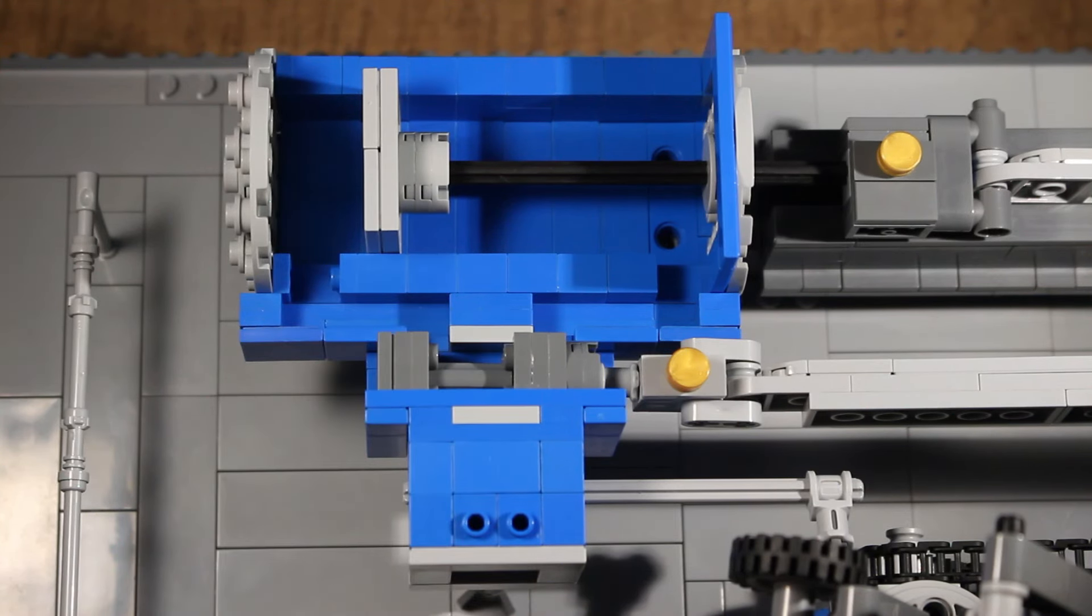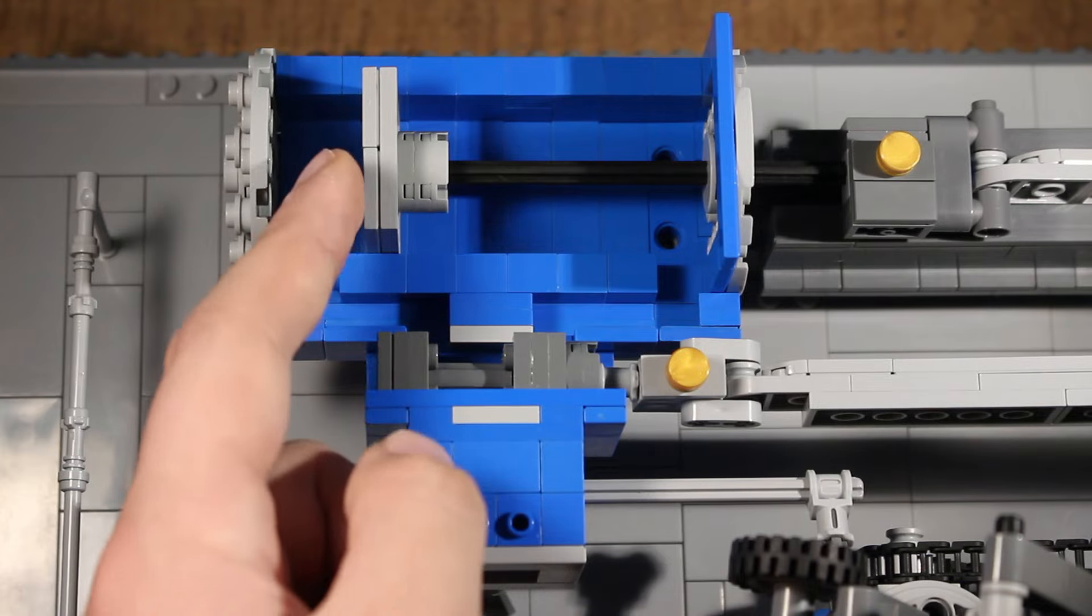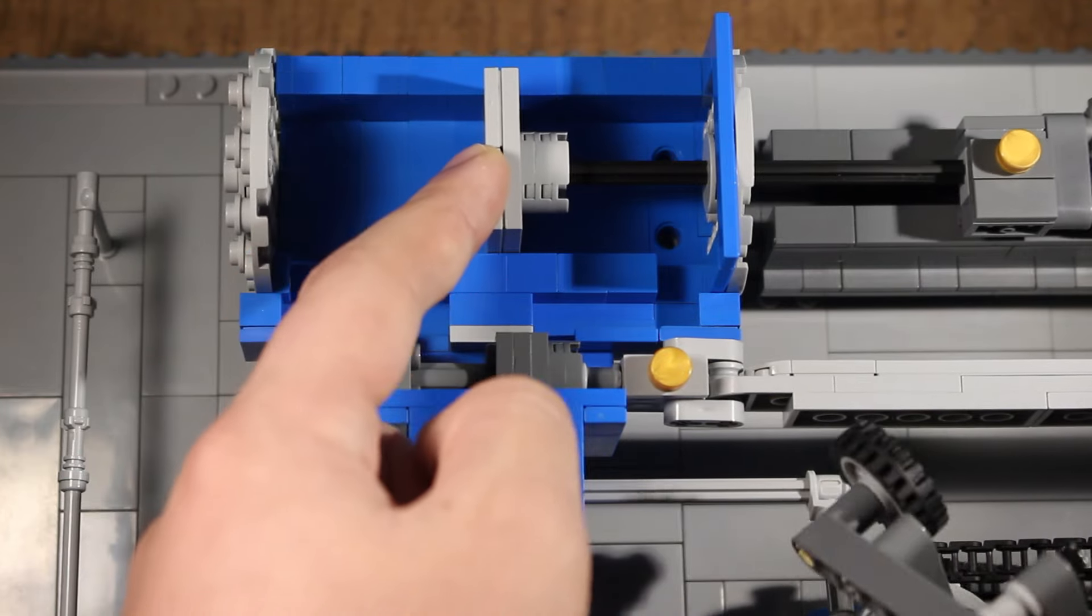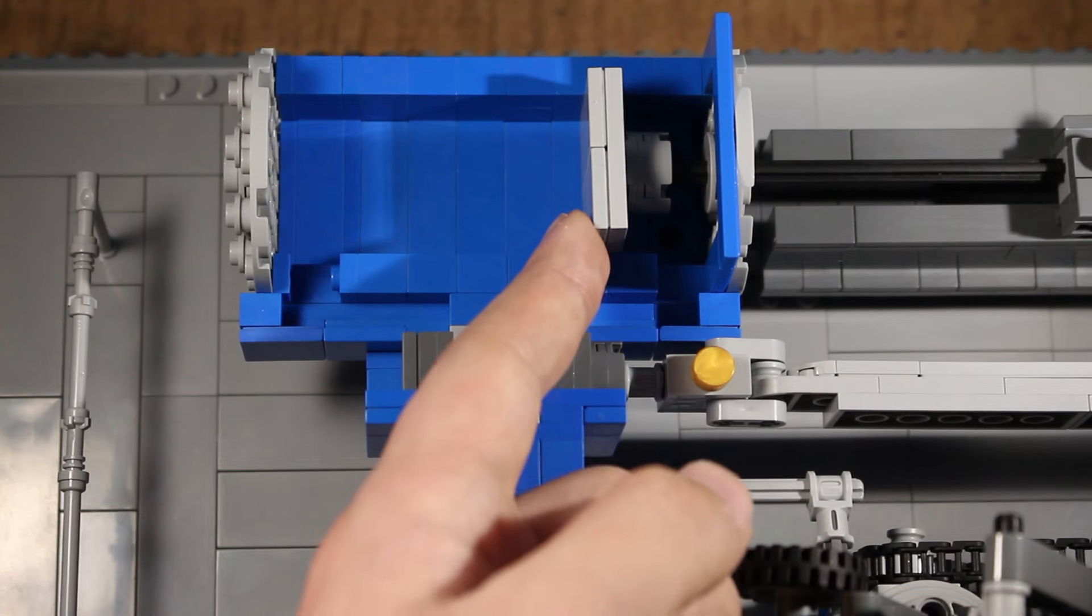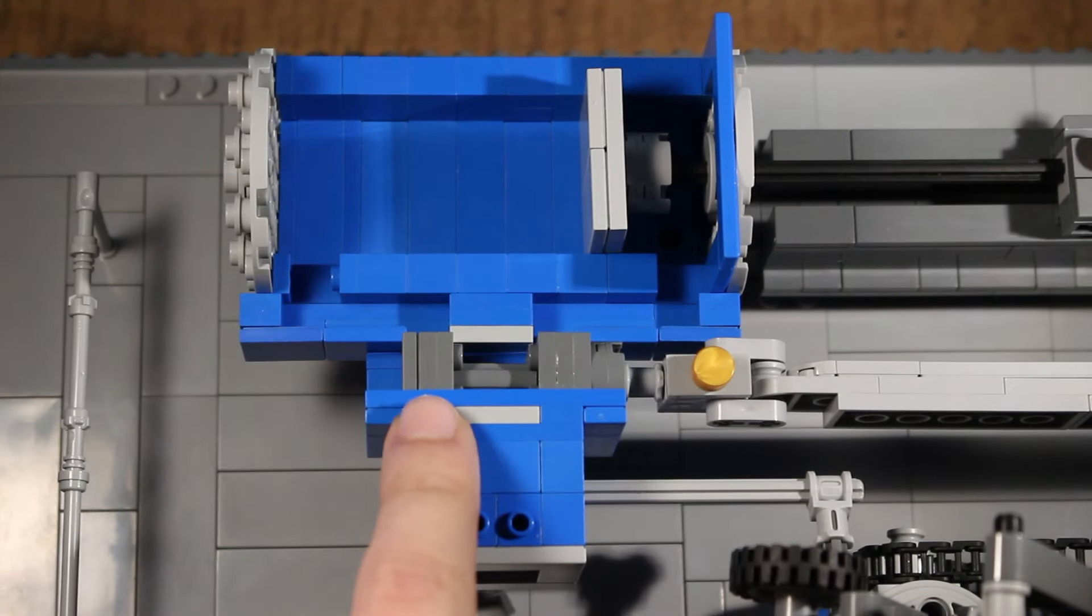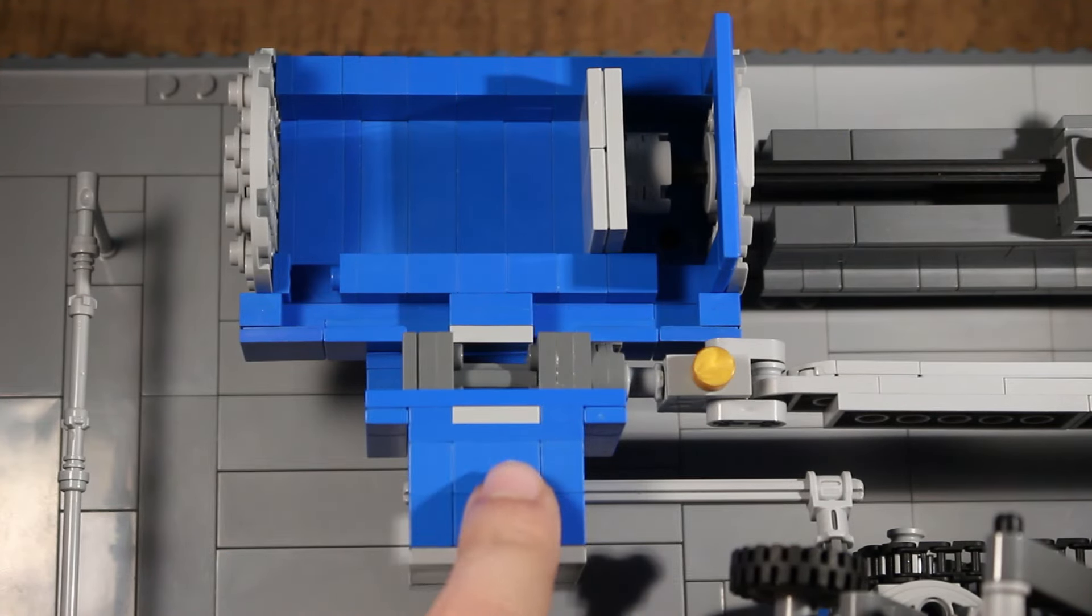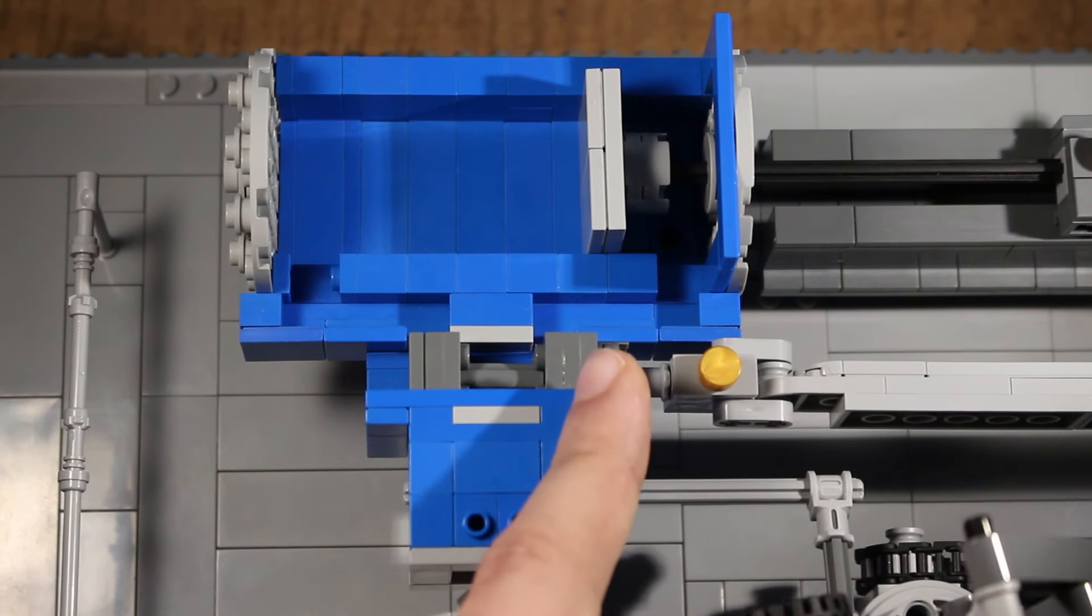Now because the steam is under extremely high pressure, that steam is going to want to push the piston back. As the piston gets to the very back of the cylinder, the valve blocks the port, keeping the steam from entering the cylinder, and it opens up the back port.